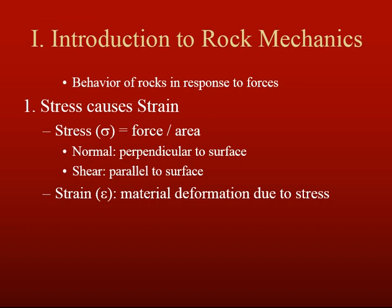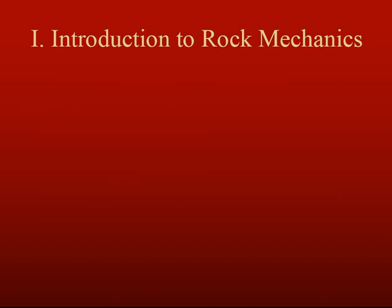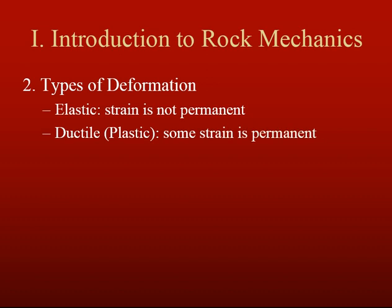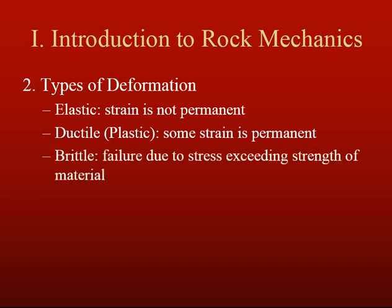Strain is defined as material deformation due to stress — some kind of change in that material. There are a couple different types of deformation. The first is elastic, where strain is not permanent — when the stress is removed, the object returns to its original configuration. The next is ductile, also referred to as plastic deformation, where some strain is permanent. And last is brittle, where failure due to stress exceeds the strength of the material.